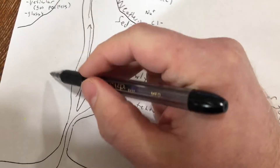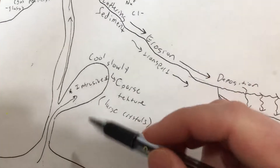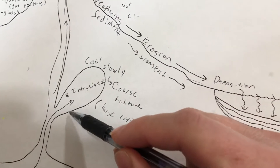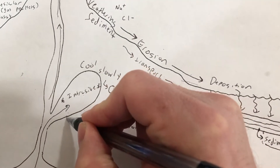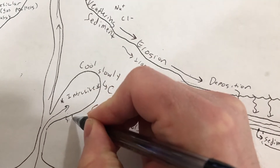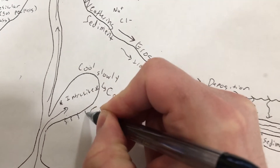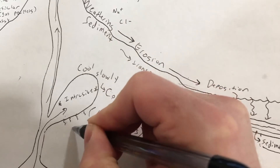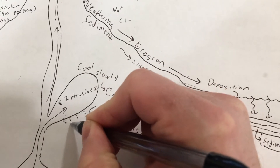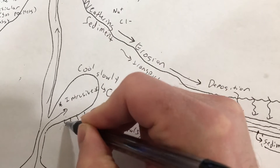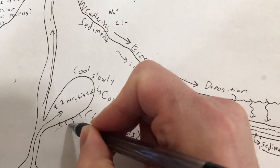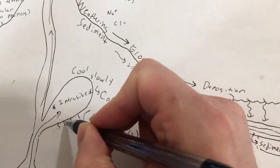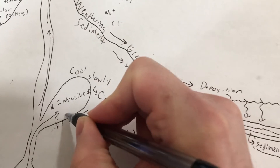When magma touches other rock — whether that be igneous, sedimentary, or metamorphic — this is going to be important when we do earth history. It's going to touch the rock and alter it a little bit. We draw little squiggles on diagrams in geology to represent that.